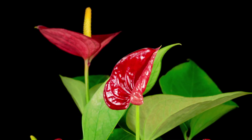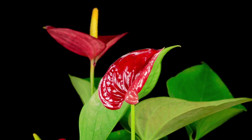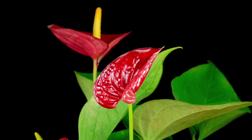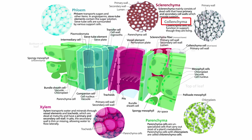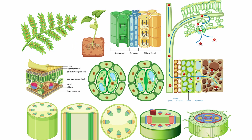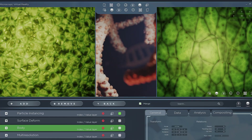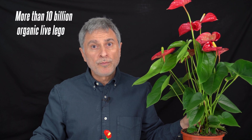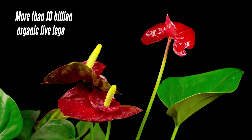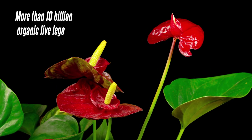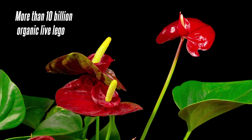The original flamingo flower consists of different tissues: parenchyma cells, collenchyma cells, sclerenchyma cells, xylem, phloem, epidermis, root cells, stomatal cells, and meristematic cells. These are cell types, but the number of cells is much higher. There are more than 10 billion cells in such a 40-centimeter flower — in other words, it consists of 10 billion non-plastic, organic Lego particles.